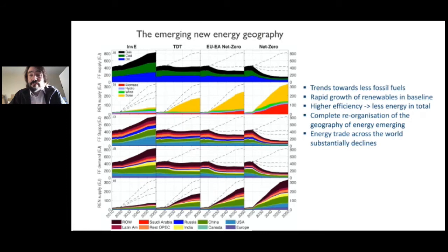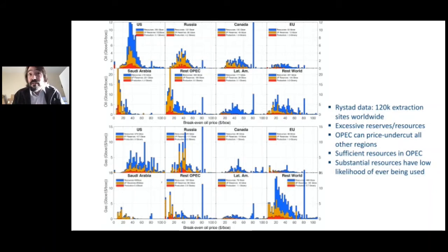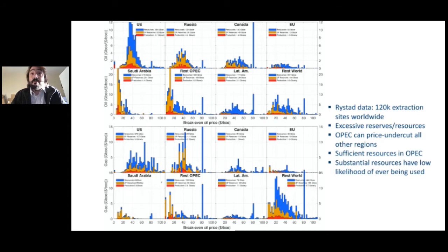This translates to financial risks. Showing cost distributions for oil and gas worldwide from the Reistad data documenting 120,000 extraction sites: there are excessive fossil fuels on the planet—too much compared to what we expect could be consumed—so large quantities may never be extracted. The Middle East still has the cost advantage over every other region, so in a peak demand scenario, US, Russian, and Canadian oil and gas might remain in the ground.